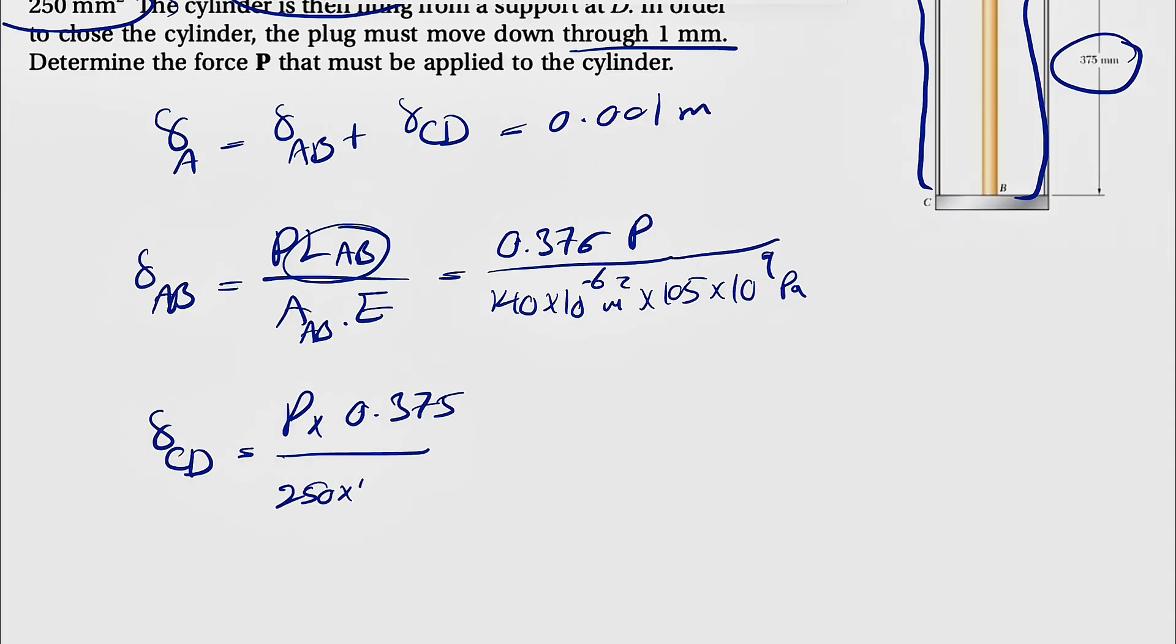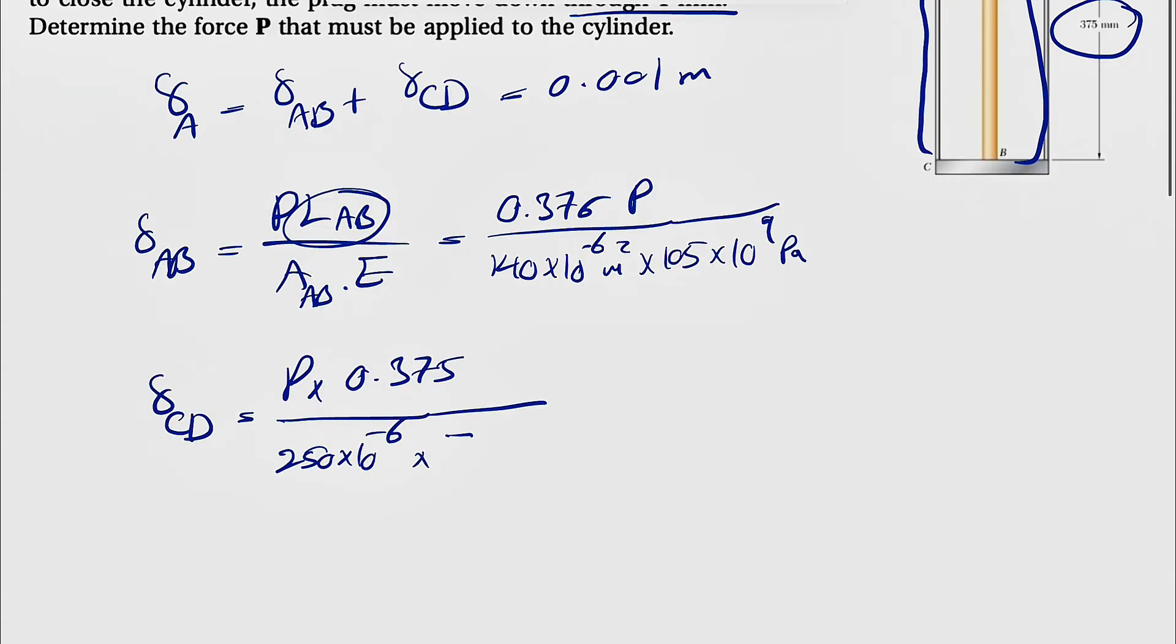And we have also the area for the aluminum. The area would be 250 and 72 is the elastic modulus, 250 times 10 to the minus 6, again, to get it in meters squared, and 72 times 10 to the 9 gigapascal.